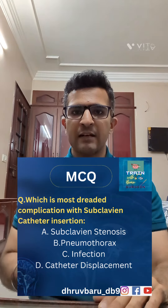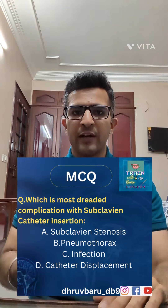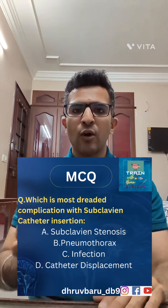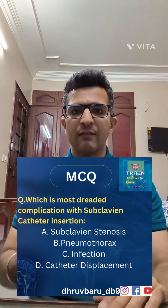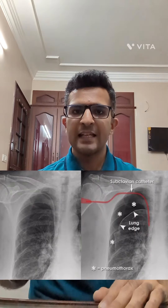But as always, if there are advantages, there have to be some disadvantages. So another MCQ point: which is the most common complication associated with a central venous catheter? When we put a line in the subclavian, the answer would be pneumothorax.